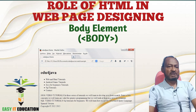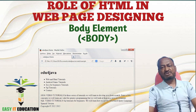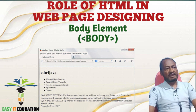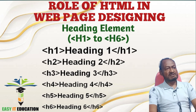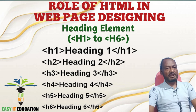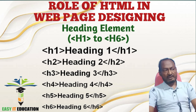Number 5: Body Element. It contains the visible content of the web page such as text, images, links, headings, paragraphs, and more. Number 6: Heading Elements. They represent different levels of headings, with H1 being the highest level main heading and H6 being the lowest level subheading.